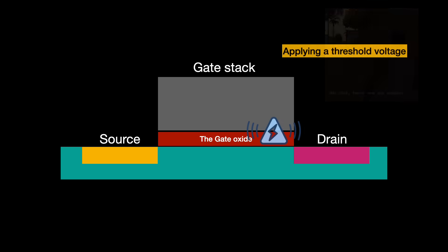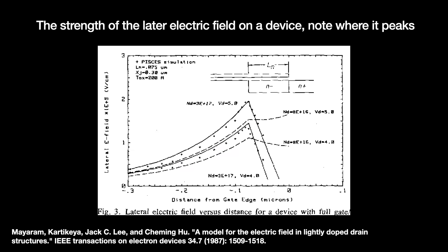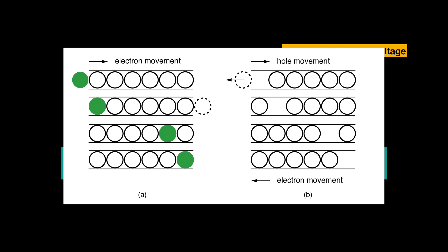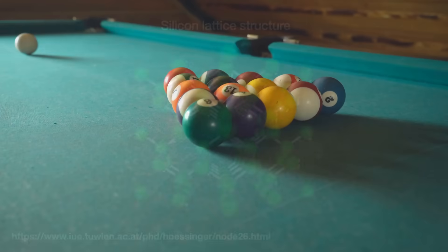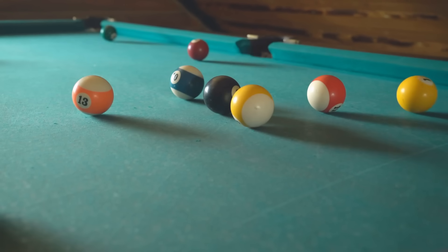We apply a minimum threshold voltage to that transistor to activate it, and in doing so, we create a lateral electric field that spreads and peaks near the drain. This field accelerates charge carriers, causing them to travel along the channel from the source to the drain. As they rush towards the drain, the charge carriers collide with various things they encounter within the silicon atom lattice. These collisions last for just a few picoseconds, which is very fast, and cause the charge carriers to slow down and release part of their kinetic energy into the lattice.